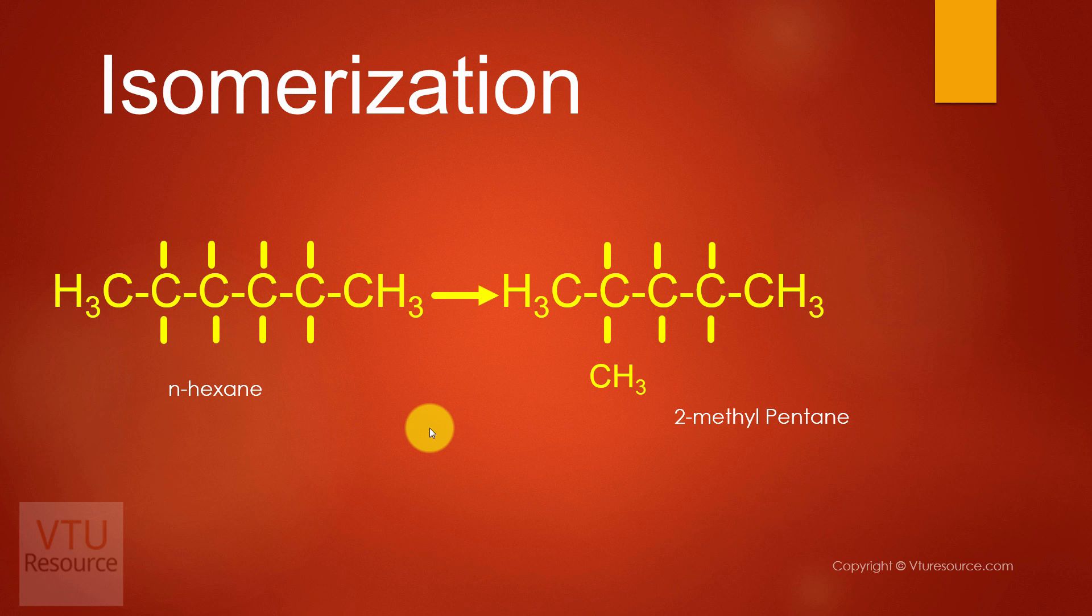Isomerization. What is isomerization? So here straight chain hydrocarbons are converted to branched chain hydrocarbons. For example, let us consider hexane, n-hexane, a straight chain hydrocarbon which contains six carbon atoms. So after isomerization, we get 2-methylpentane.